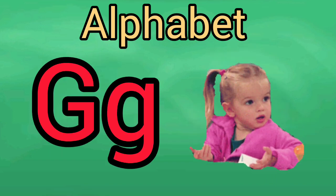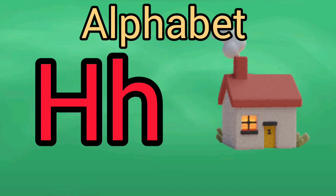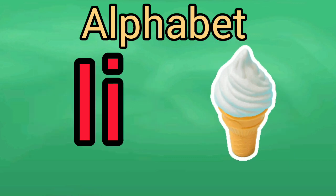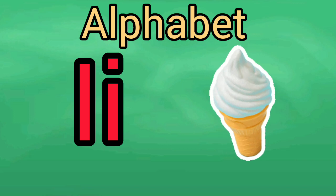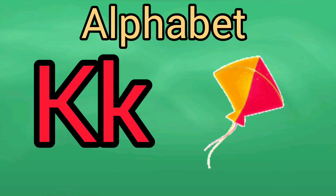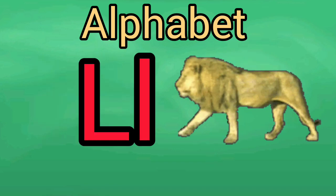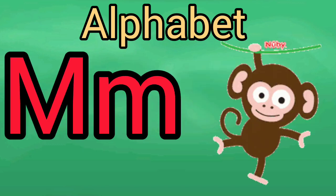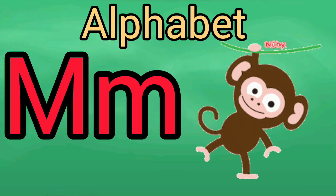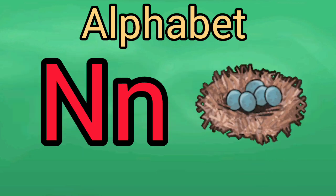We put gun, H for home, I for ice cream, J for dad, J for kite, L for lion, M for monkey, M for nest.